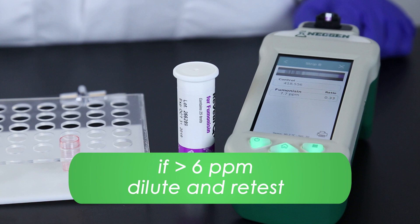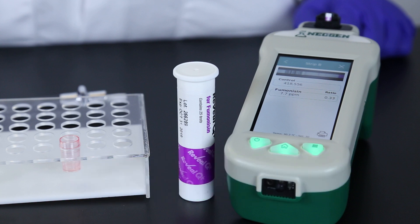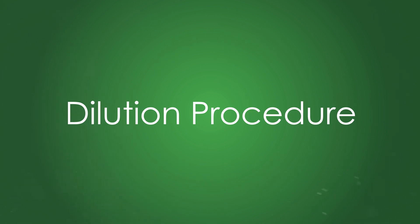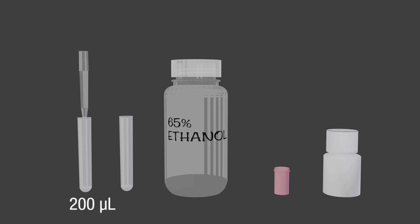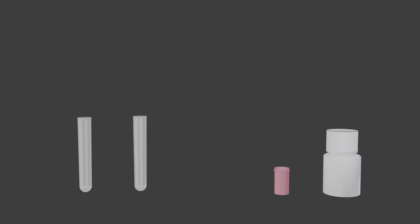For samples greater than 6 ppm, you will need to dilute and retest. Add 200 microliters of sample filtrate to a sample collection tube. Add 200 microliters of 65% ethanol and mix well. Transfer 200 microliters of the sample dilution to a red dilution cup. Add 400 microliters of sample diluent and mix well.